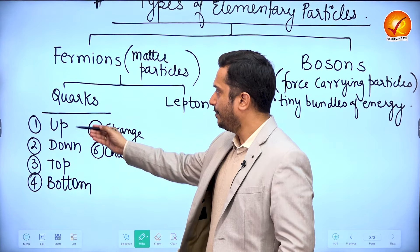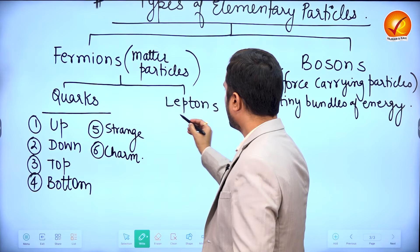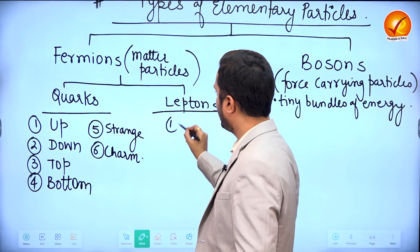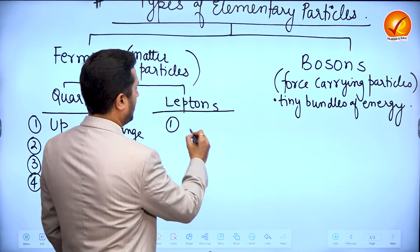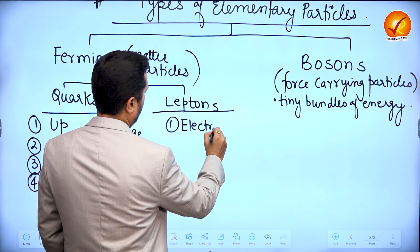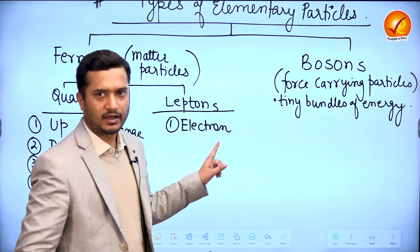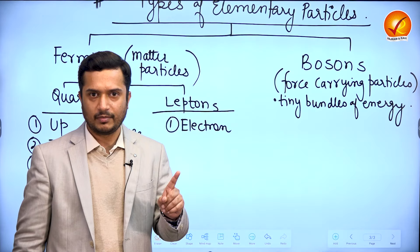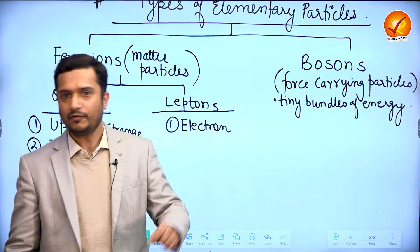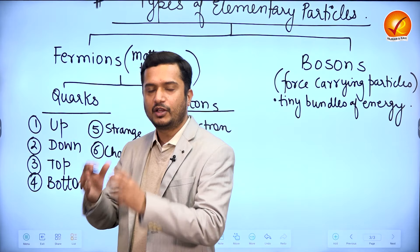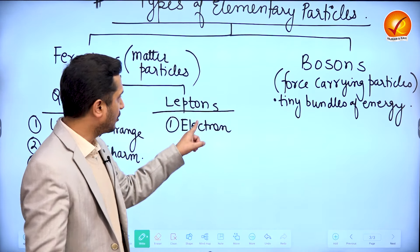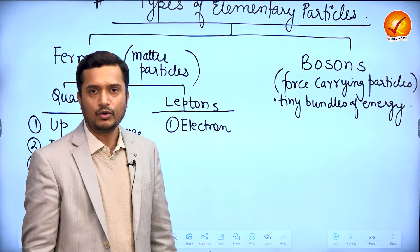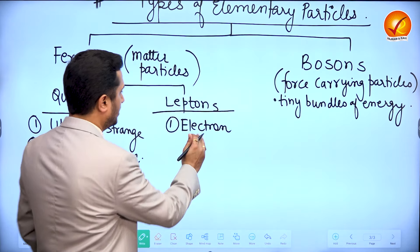The six quarks are named: up, down, top, bottom, strange, charm. Talking about leptons — we have six types of leptons also, and the most popular lepton you would have heard about is the electron. Electrons themselves are the elementary particles. Protons and neutrons are not elementary particles because they are made up of quarks, but electrons are the elementary particles themselves — you cannot further break down an electron into more simpler particles.